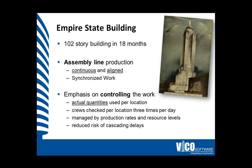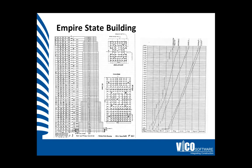The concept of production control is not a novel one. It started back in 1931 during the construction of the Empire State Building. On the Empire State Building, production was treated like an assembly line. Work was continuously aligned to be synchronized. The emphasis on controlling the work included counting actual quantities by location, ensuring that the crews were in the correct locations, managing the production and the resource leveling and logistics, which overall reduced the risk of cascading delays and allowed the Empire State Building to be completed in 18 months from design to client handover.